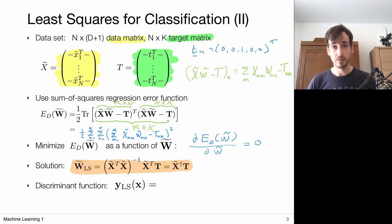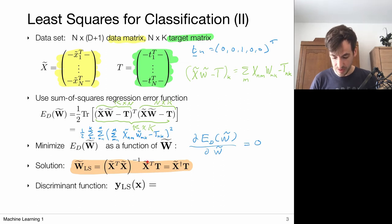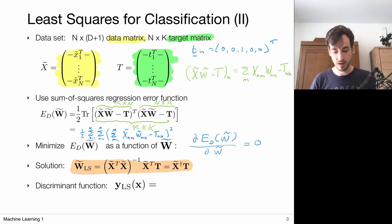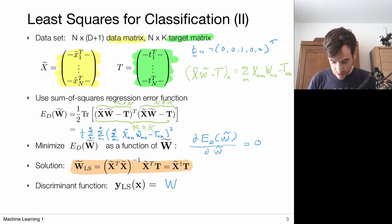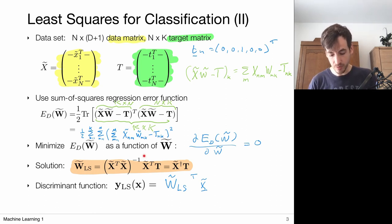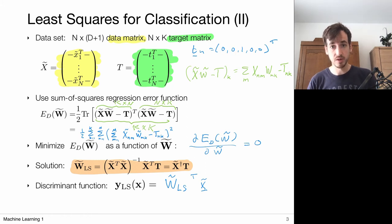This looks very similar to what we've seen before in the least squares regression case, though now this is the multivariate regression case. The form is essentially the same: we take the pseudo-inverse of the data matrix X and multiply it with the targets, which gives us the weight matrix W. This then provides my discriminant function — the least squares solution W^T x.